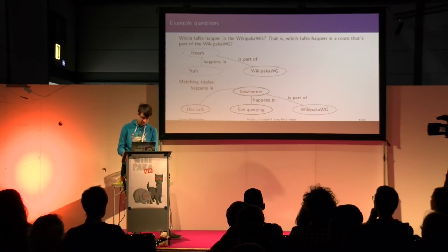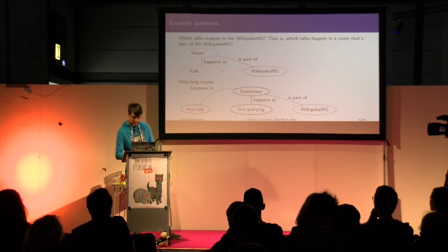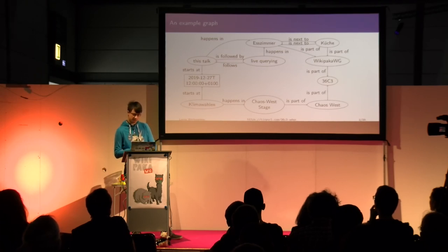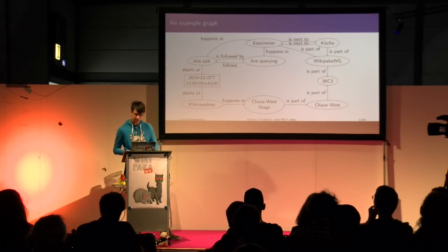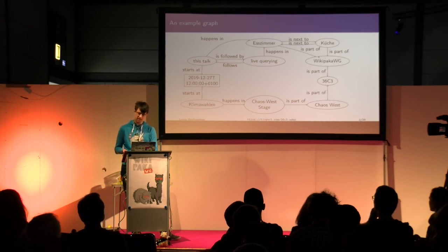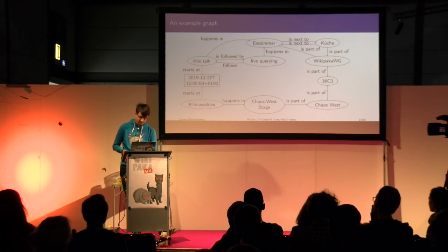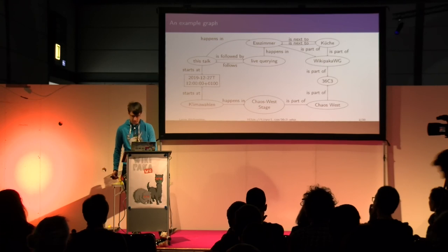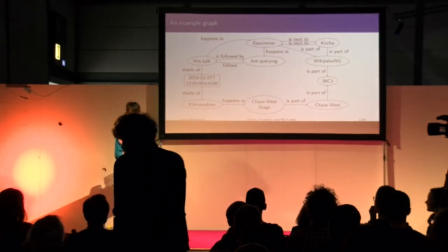In this case you get two matches: this talk happens in S-Stima, which is part of Wikipaka-WG, and live querying happens in S-Stima, which is also part of Wikipaka-WG. If we had more information in the graph — like the library also having talks — we'd find those as well. We could also adapt the query so we don't fix the Wikipaka-WG part, asking for anything that happens in 36C3: some variable happens in some room, is part of some assembly, is part of 36C3. Does that make sense? I see a lot of nodding heads.